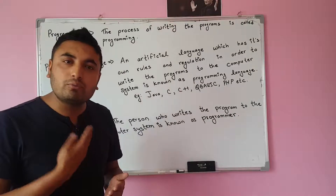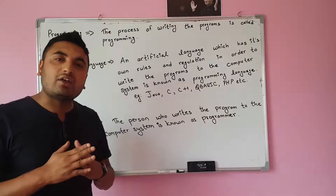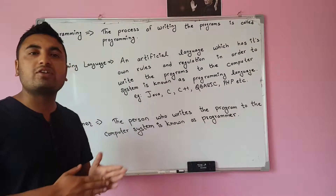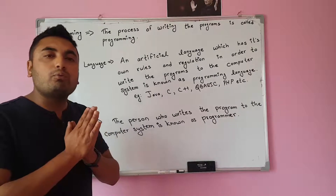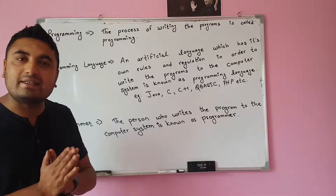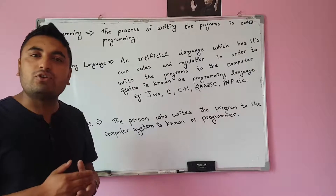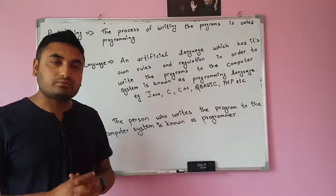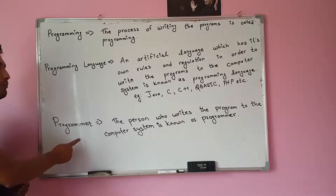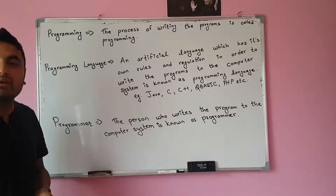Now if you want to use software, you need a programming language to write it. Software is a collection of instructions written using a programming language. QBasic is also a type of programming language that is used to write programs for the computer system. So before QBasic, the first chapter is about programming, programming language, and programmers.